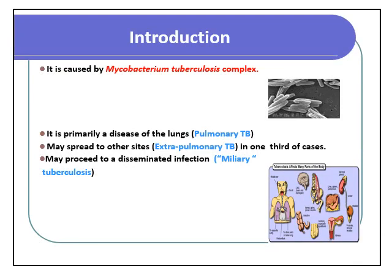Tuberculosis is caused by Mycobacterium tuberculosis complex. It is primarily a disease of the lung, called primary pulmonary tuberculosis, and may spread to other sites — extra-pulmonary tuberculosis — in one third of cases, and may spread to disseminated infection, miliary tuberculosis.